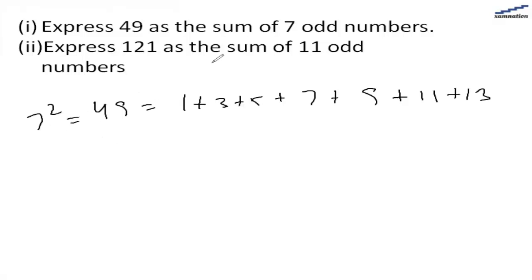Express 121 as a sum of 11 odd numbers. 121 is basically 11 squared and we can represent it as 1 plus 3 plus 5 plus 7 plus 9 plus 11 plus 13. These are seven numbers.